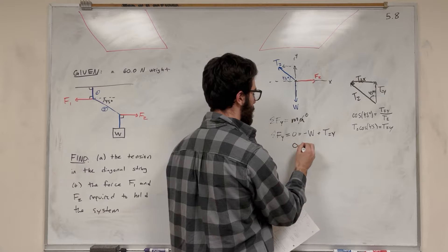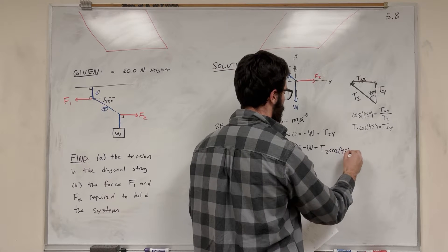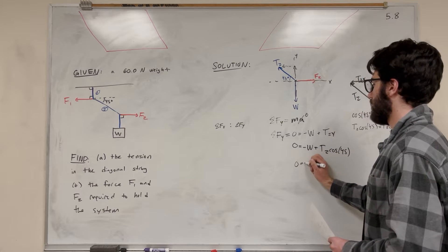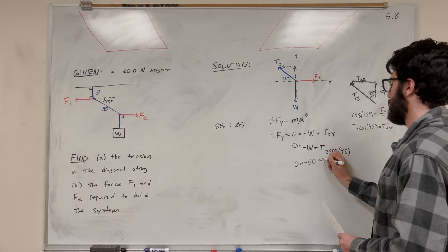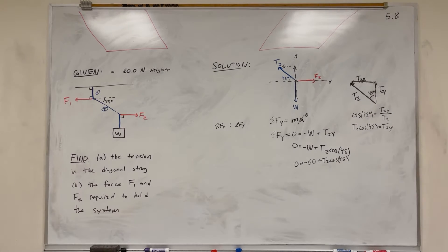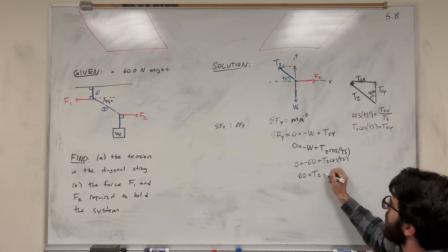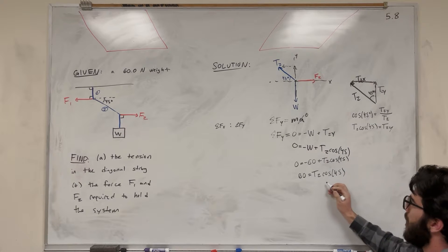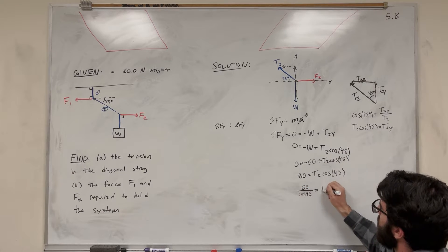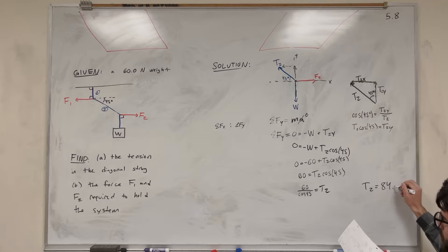So we get: 0 = -W + T2·cos(45). We know weight is 60N, so: 0 = -60 + T2·cos(45). We just have one unknown: T2. Adding 60 over gives 60 = T2·cos(45). Dividing by cos(45): T2 = 60 / cos(45). Doing the math, T2 = 84.9 N. So we solved part A.